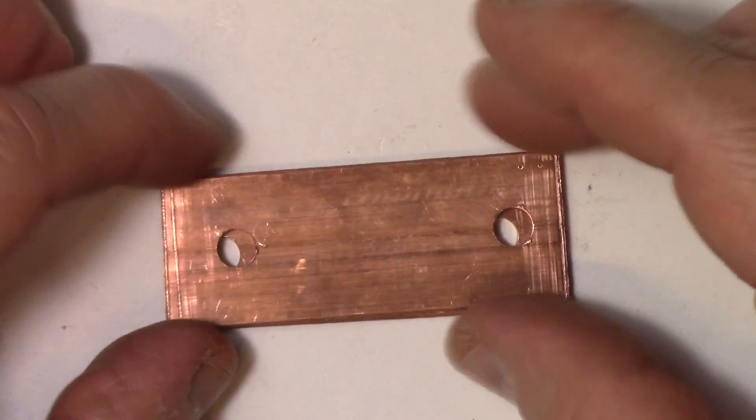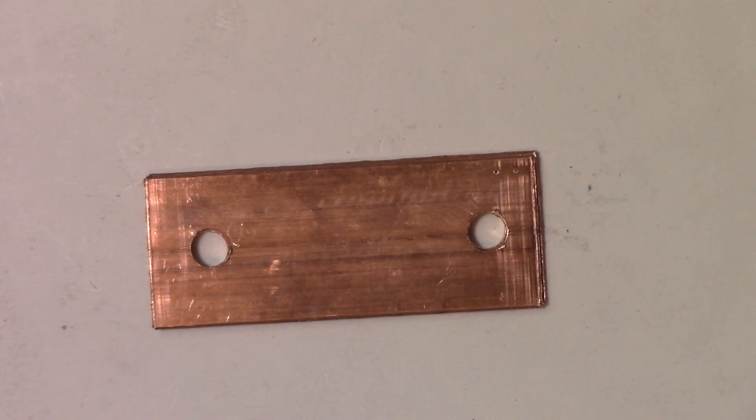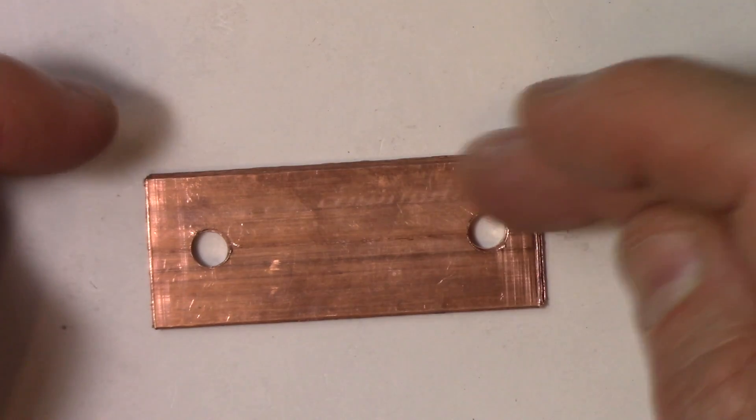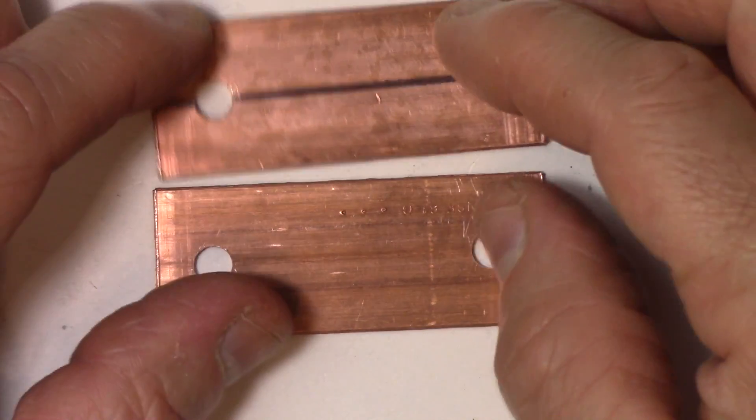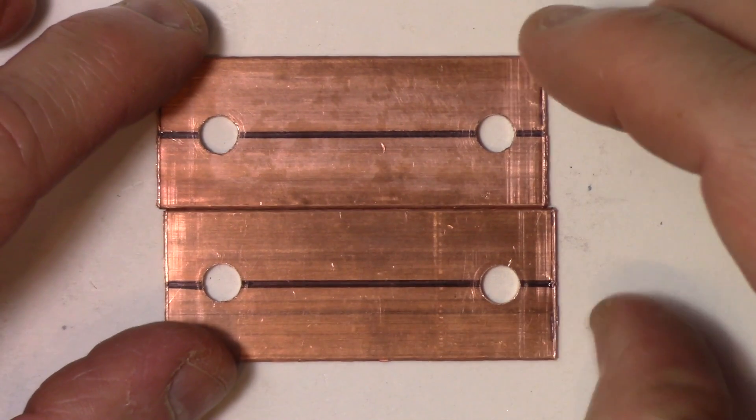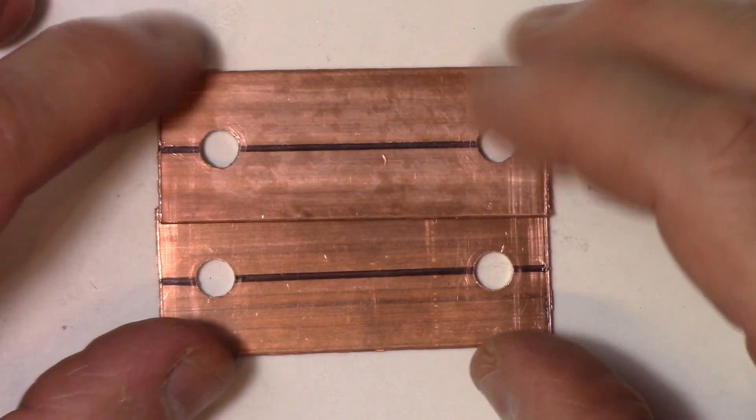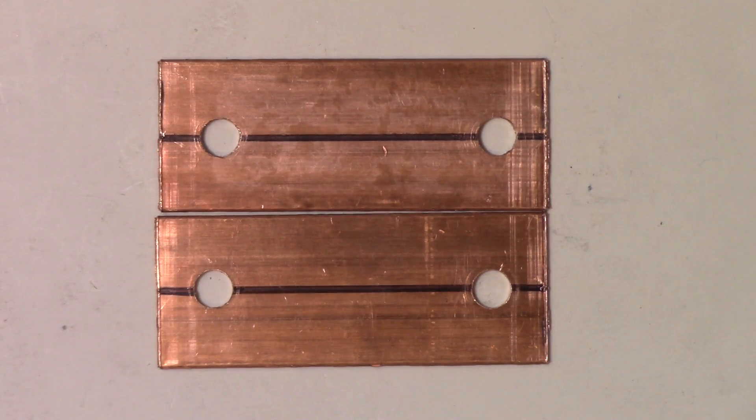And what really counts is, A, they're made out of copper. And B, they make full contact with whatever you're connecting together. So that's how you make the copper bus bars that I used on my Headway 38-120s that I used to start my car.